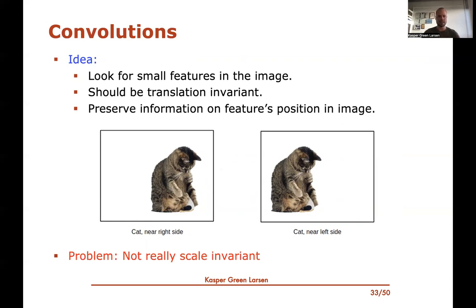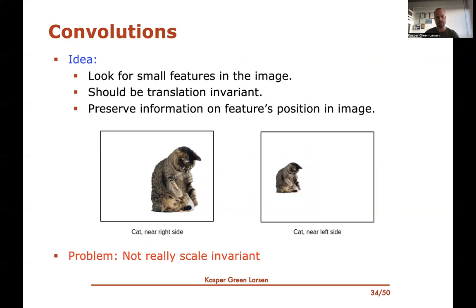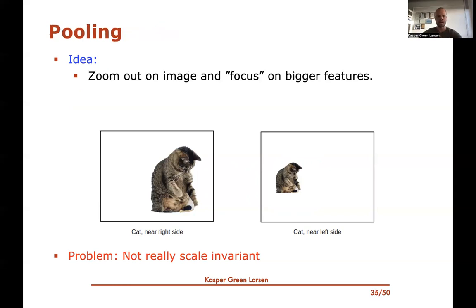One issue is that convolutions are not very scale invariant. Sliding a fixed-size window across an image behaves very differently for a small cat versus a large cat. This motivates the last key idea we'll cover: pooling.